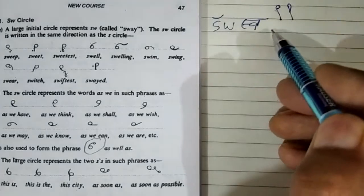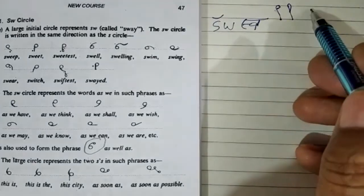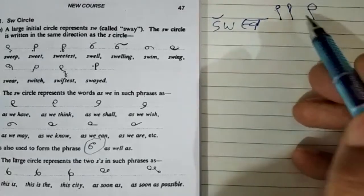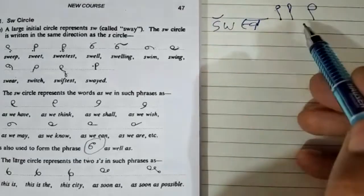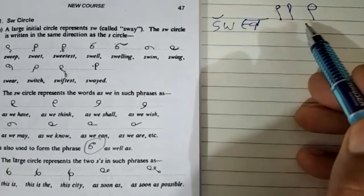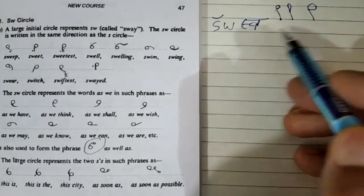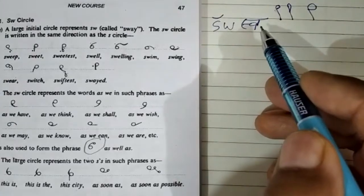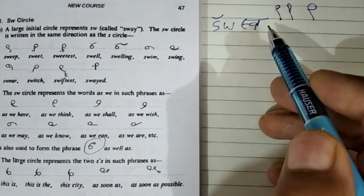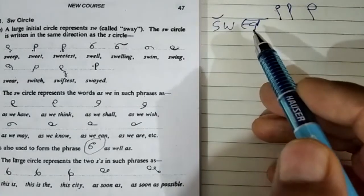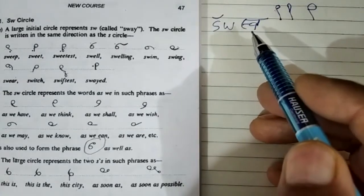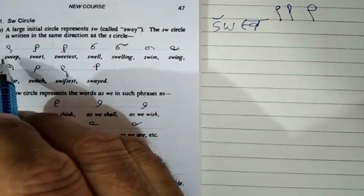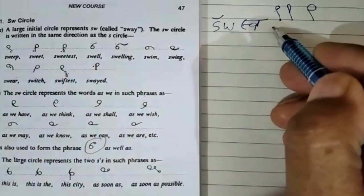So you write S-W in this anti-clockwise manner — the same way as the S and ST loop.